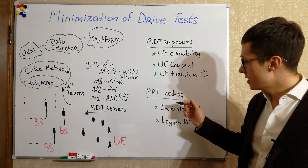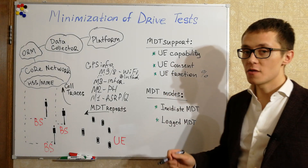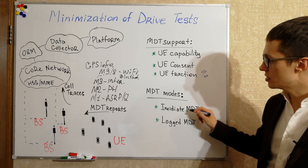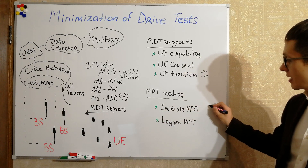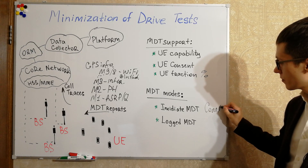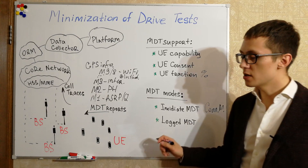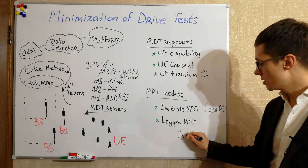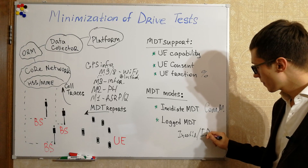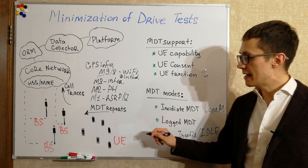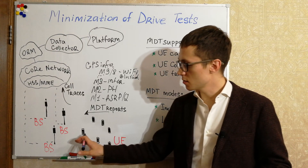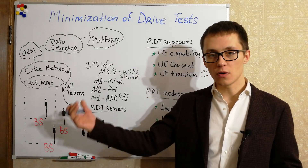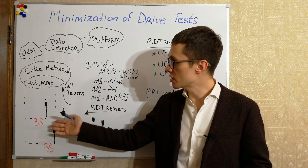Let's continue with MDT modes. There are two MDT modes. Immediate MDT is when we configure MDT reports for users in connected mode. Logged MDT is when users go to inactive or idle mode, and after reconnecting to the base station — after RRC connection — users can send all collected information to the base station and our platform.